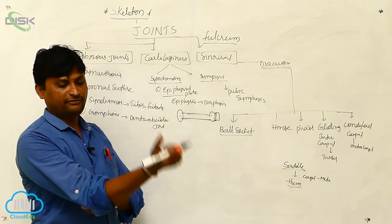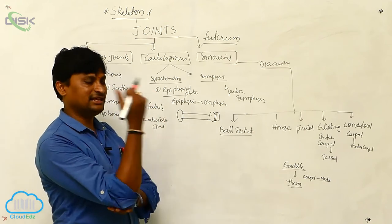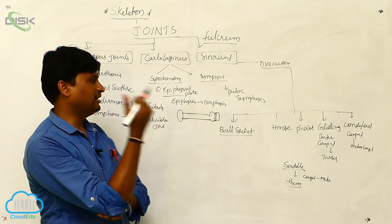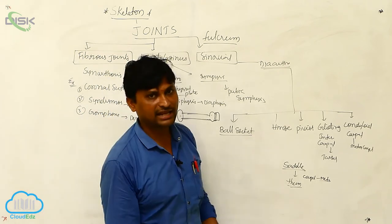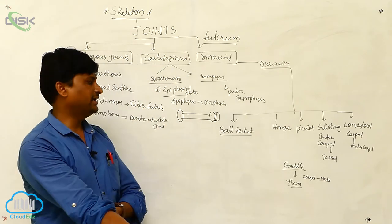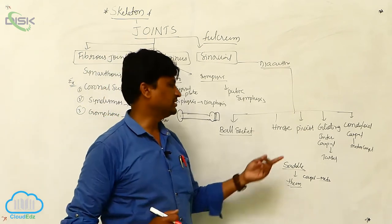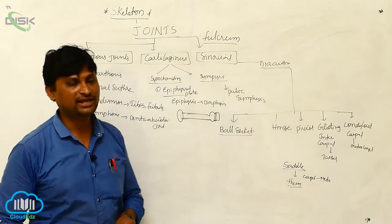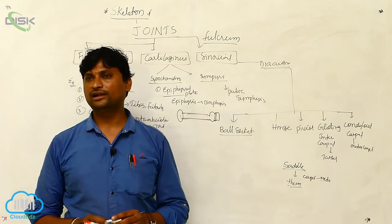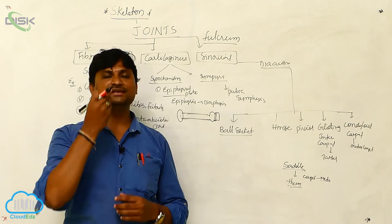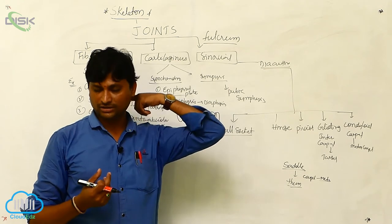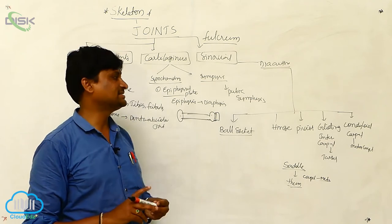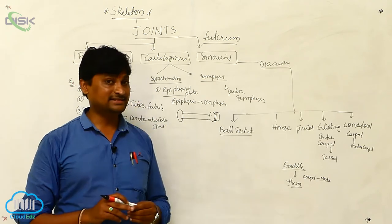Next is the hinge joint. In hinge joints, only a forward and backward type of movement is acceptable. Examples of hinge joints are found at the knee area and the forearm area. Third is the pivot joint, which is articulated where the skull connects to the vertebral column — specifically at the atlas and axis vertebrae.